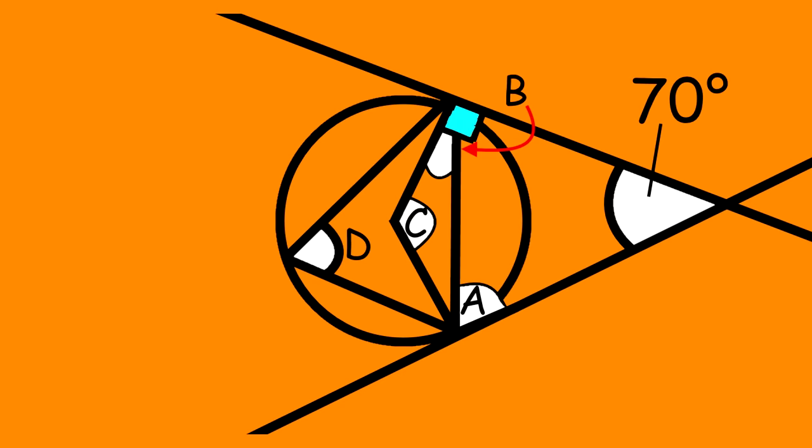Well, as previously explained, when a radius and a tangent meet, this creates a 90 degree angle. Now we have 35 degrees from the previous answer, we times that by 2 to get 70. Now we take it away from 180 degrees.